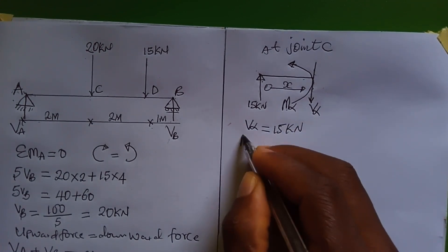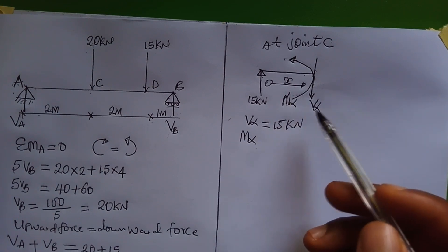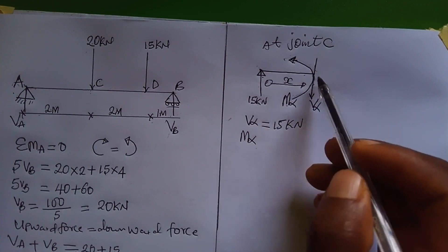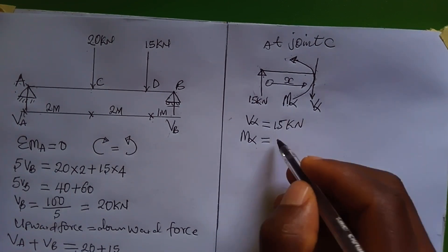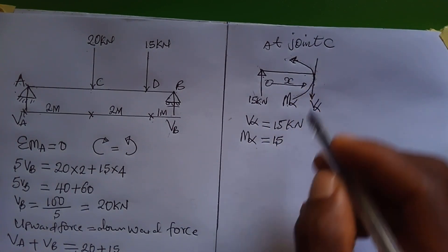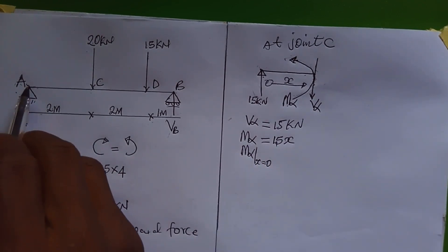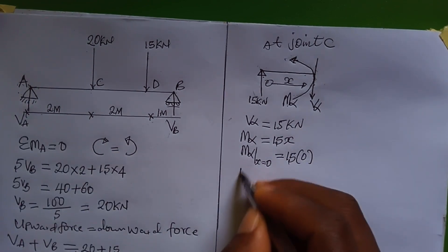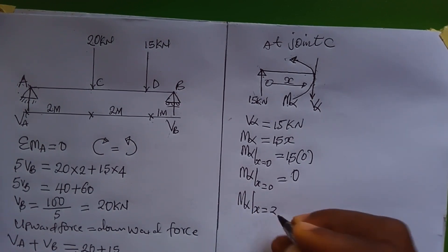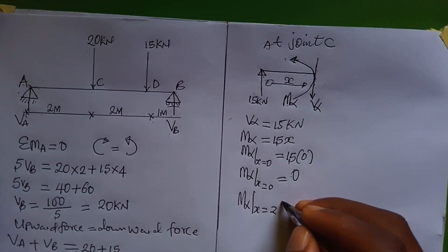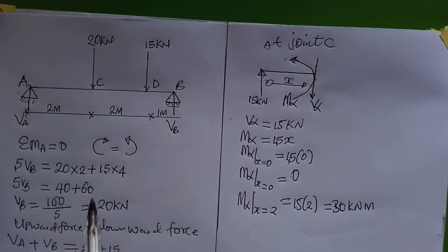For M_alpha, the moment is moving clockwise, and the 15 kN force also moves clockwise, covering distance x. Therefore M_alpha equals 15x. At x = 0, M_alpha = 0 kilonewton meters. At x = 2 (point C), M_alpha equals 15 × 2 = 30 kilonewton meters.